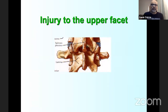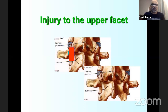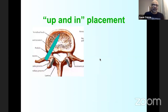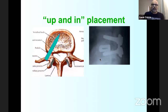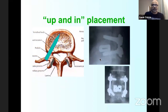Injury to the upper unfused facet from an incorrectly superior entry point can cause adjacent level pain or disease. To avoid this, the entry point should be slightly inferior and lateral. With an inferior-lateral entry, the screw must be directed superior and medial — the 'up-and-in' placement. This technique also allows use of a longer screw and avoids the parallelogram effect.